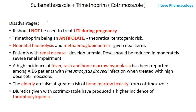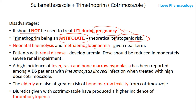The disadvantages of cotrimoxazole: it should not be used in the treatment of UTI during pregnancy, because trimethoprim acts by inhibiting folate synthesis and is an anti-folate agent that can cause teratogenic risk. There is also a high chance of causing neonatal hemolysis and methemoglobinemia when given near term. It has a high incidence of fever, rash, and bone marrow hypoplasia, especially among AIDS patients with Pneumocystis jirovecii infection.